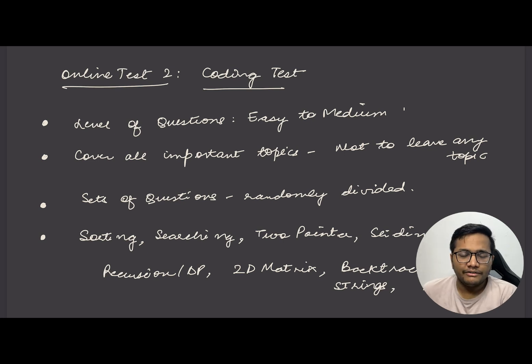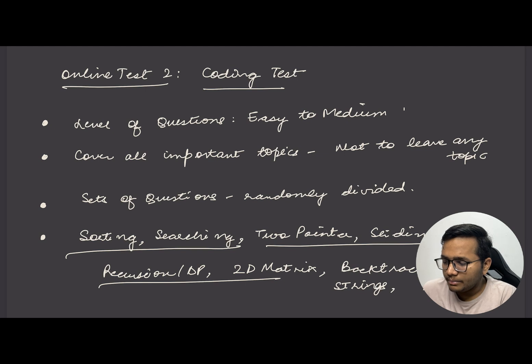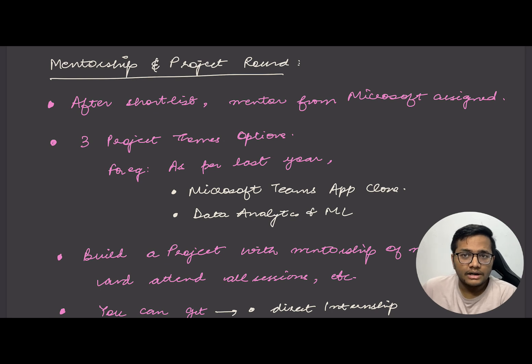Sets of questions are randomly divided. Not everyone gets the same question; every individual gets different questions. There's no camera proctoring as per last year, but rules might change. Important topics that were fundamentally asked last year: sorting, searching, two-pointer approach, sliding window approach, recursion, DP, 2D matrices, backtracking, BFS, DFS, strings—majorly these basic fundamentals. Focus on these topics and try solving more questions so you can ace the exam.